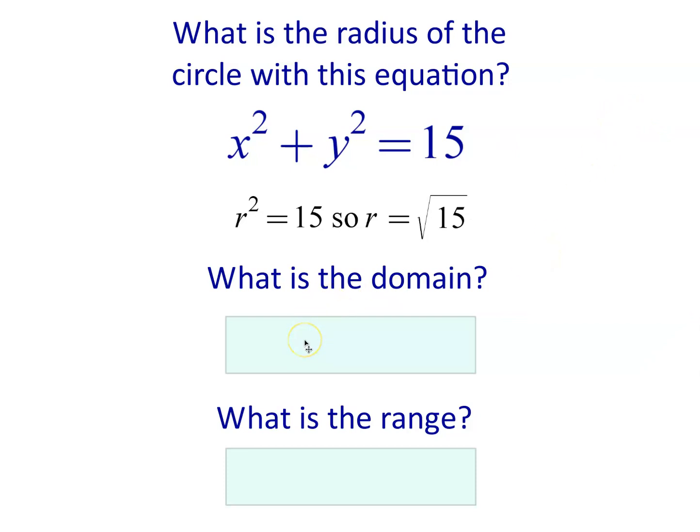What is the domain? Well, it's going to range between negative root 15 and positive root 15. Again, the center is at the origin, so the smallest it can be is root 15 to the left on the x-axis, which puts it at negative root 15, and positive root 15 is the largest value. And because it's symmetric, once again, that's going to be much the same answer for the range, but instead of having an x in there, you're going to have a y.